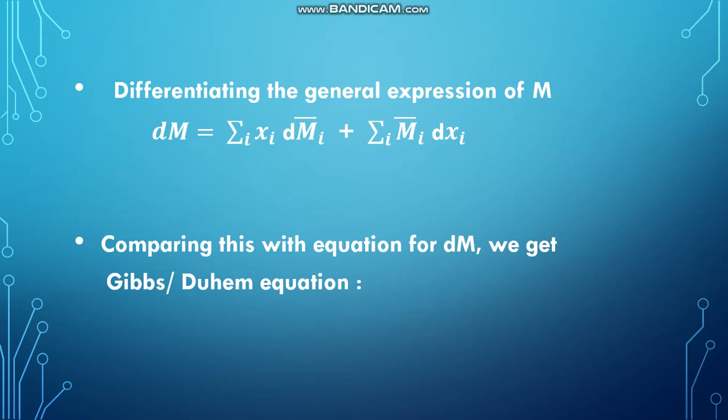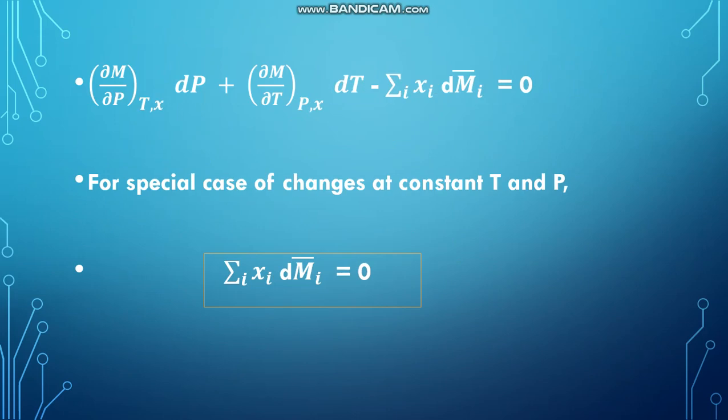Differentiating the general expression for M gives dM equal to sigma I of Xi dMi bar plus sigma I of Mi bar dXi. Comparing this with the earlier equation for dM, we get the Gibbs-Duhem equation: dou M by dou P at constant T,X into dP plus dou M by dou T at constant P,X into dT minus sigma I of Xi dMi bar equals zero. For the special case of changes at constant temperature and pressure, this simplifies to sigma I of Xi dMi bar equals zero. These two equations are known as the Gibbs-Duhem equation.